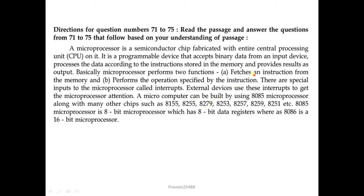From question number 71 to 75, read the passage and answer based on your understanding. A microprocessor is a semiconductor chip with an entire central processing unit fabricated on it. It is a programmable device that accepts binary data from an input device, processes the data according to instructions stored in memory, and provides results as output. Microprocessors have special inputs called interrupts. A microcomputer can be built using the 8085 microprocessor along with chips such as 8155, 8279, 8253, 8257, 8259, and 8251. The 8085 is an 8-bit microprocessor, whereas the 8086 is a 16-bit microprocessor.